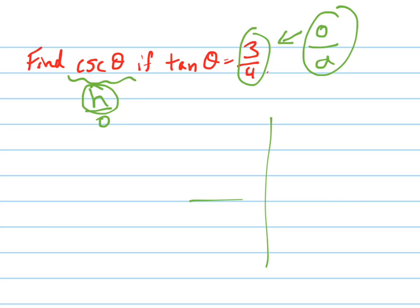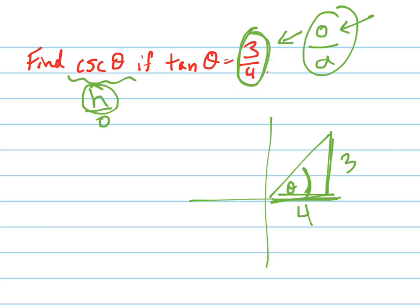So here's my picture. I like to draw it on a unit circle, and notice the tangent is positive, so 3 fourths — that means the opposite side of the angle. So here's my angle right here, theta. The opposite side is 3, right here, and the adjacent side is 4. And of course we know that we have a 3, 4, 5 triangle.